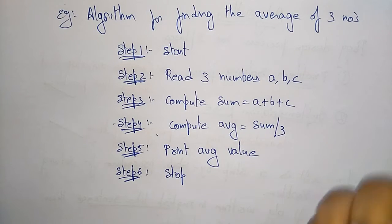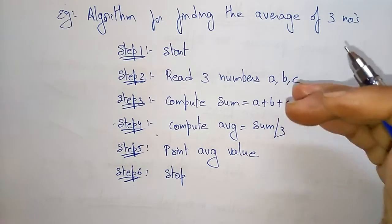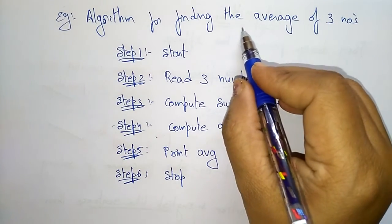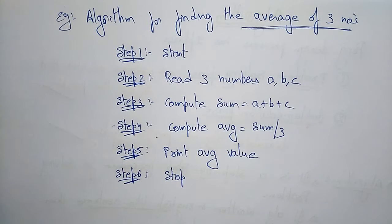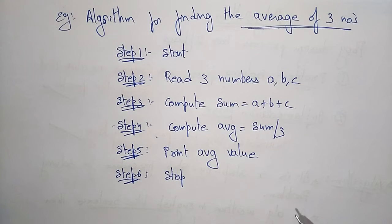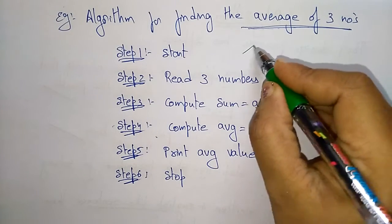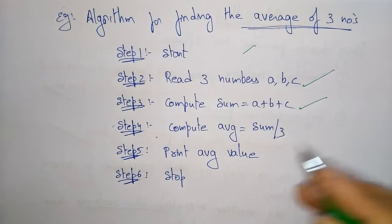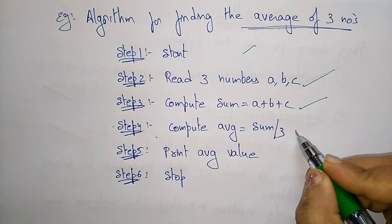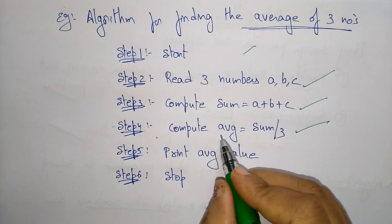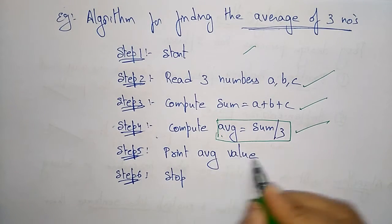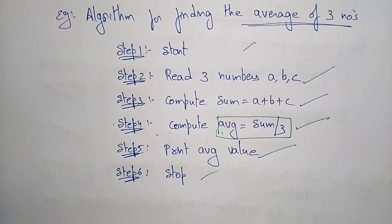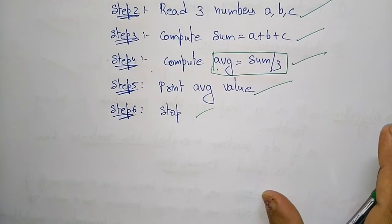This is how you write the algorithm — a step-by-step procedure for solving a problem. The problem here is to find the average of three numbers. If you write an algorithm before writing the program, it is easy for programmers to develop the program. First start the program, read the values, compute the sum, calculate average = sum / 3, print the average value, then stop.